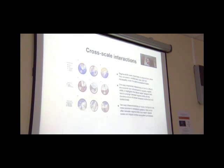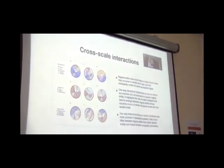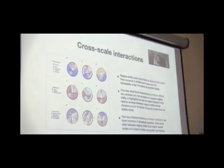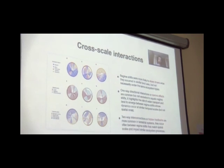So in summary, regime shifts were more likely to share drivers with their own similar land uses, but not the same ecosystem types as we expected. The domino effects are common, but not exclusive to aquatic regime shifts. It highlights the role of water transport and temperature links between regime shifts with similar temporal scales, but no spatial ones. And hidden feedbacks, on the contrary, are more common in terrestrial systems. They do indeed happen where the scales match in space and time, and also impact similar ecosystem processes.